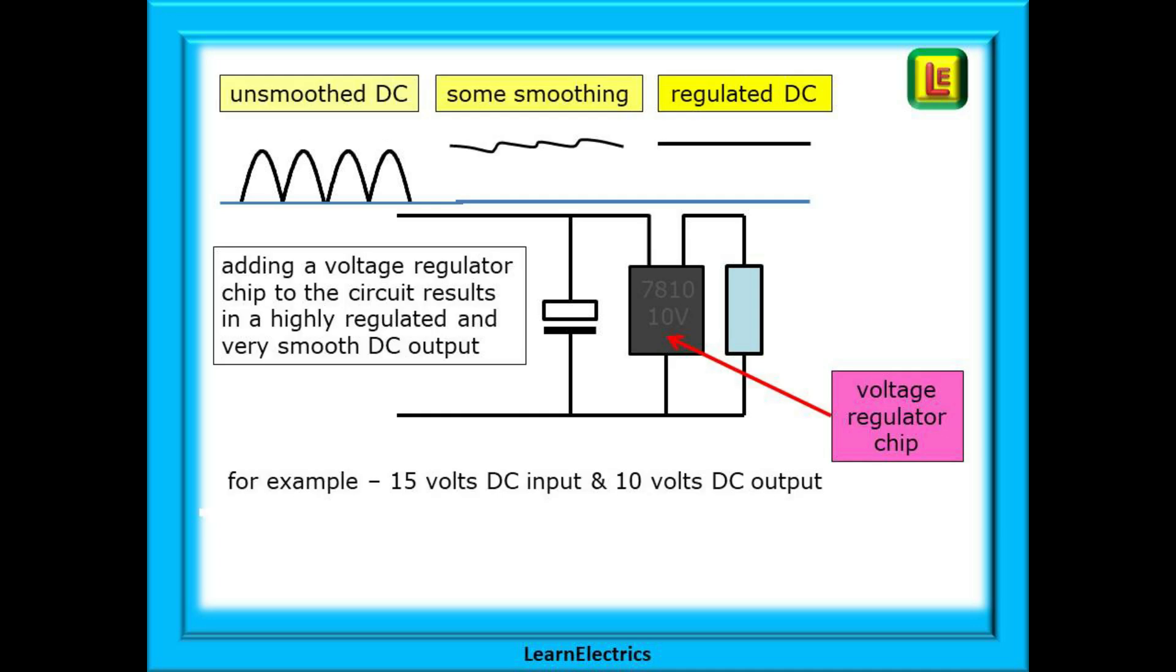We can go a step further if we wish and use a voltage regulator chip or integrated circuit to give us what we call a ripple free output. This is a very smooth DC voltage.